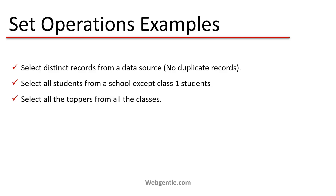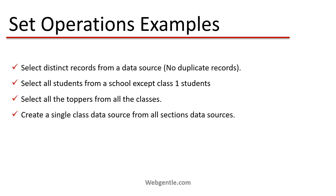The next example is to select all the toppers from all the classes. We have multiple classes and from those classes we need to fetch all the toppers — meaning we need unique records from all the sources. The last example is to create a single class data source from all sections' data sources. Suppose a class has multiple sections — section A, section B, section C — each with its own data source. After combining them, after a union of all of them, we create a new single data source.